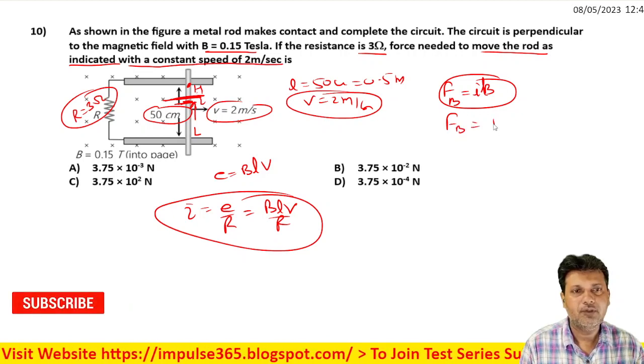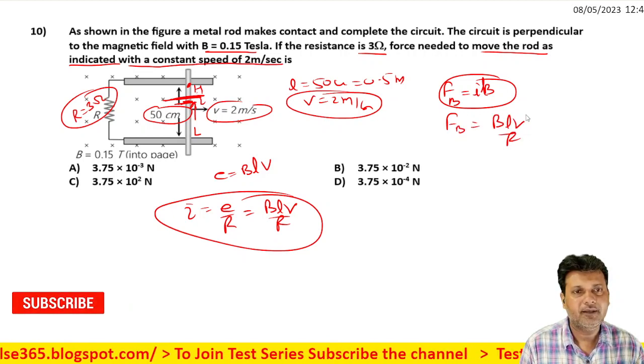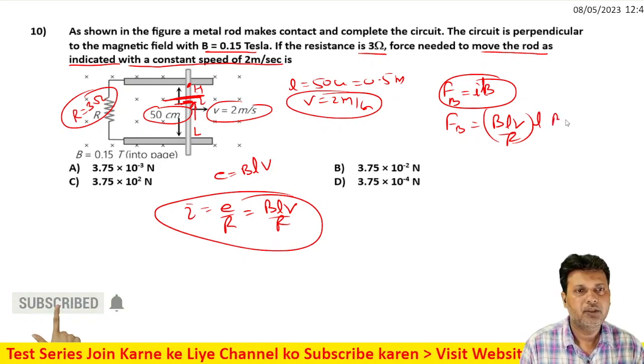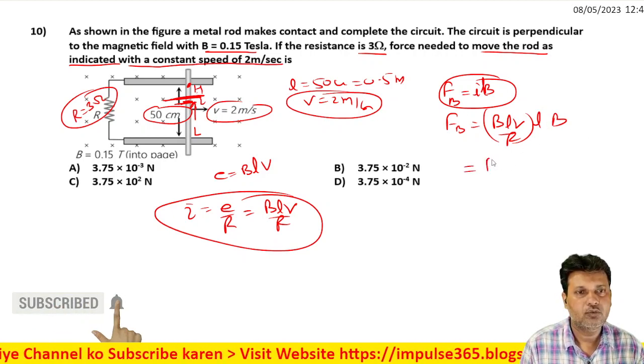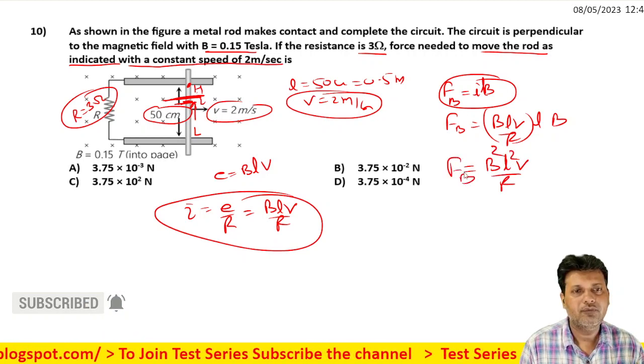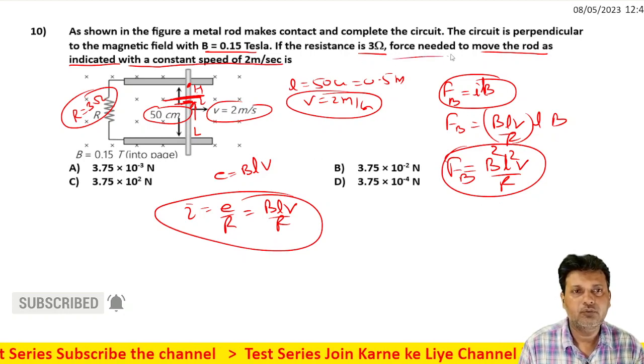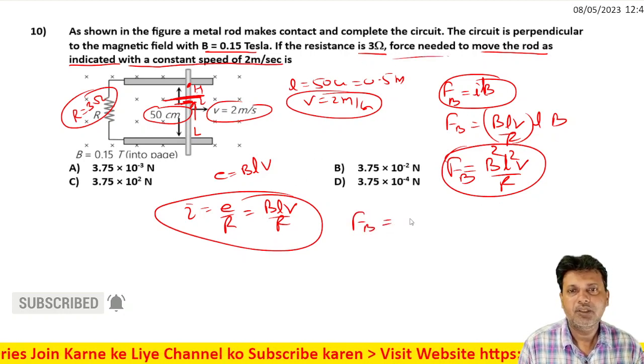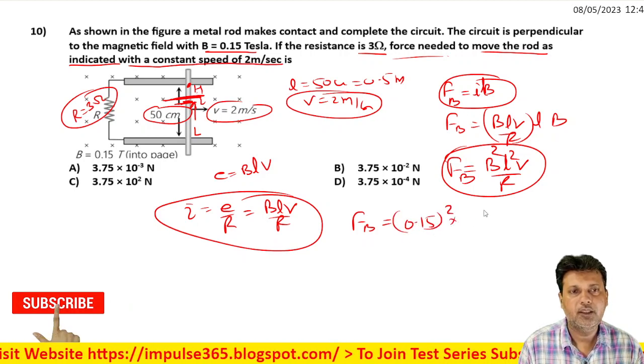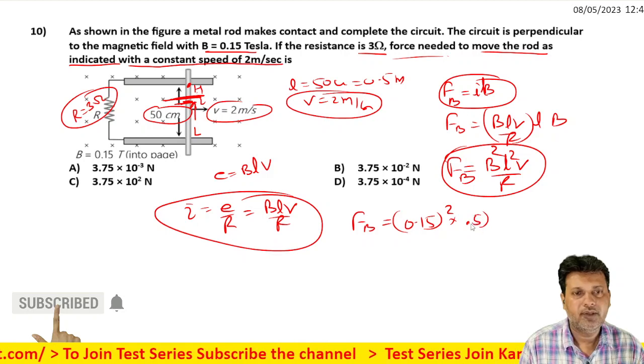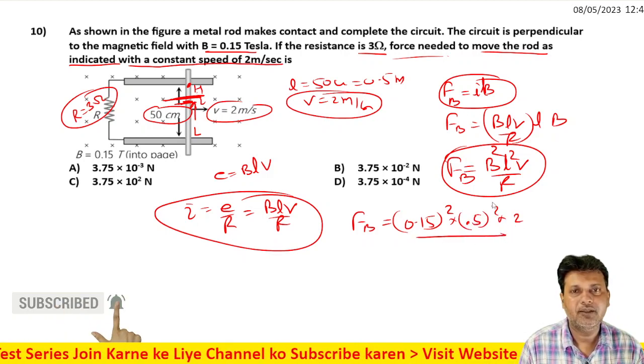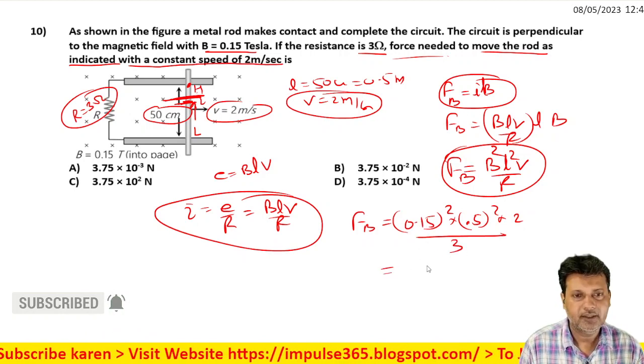The magnetic force: I value is B L V by R, length L into B. So B squared L squared V by R - this is the magnetic force value to calculate. Taking the values: B = 0.15 squared, length 0.5 squared, times 2 meters per second, divided by resistance 3 ohms.